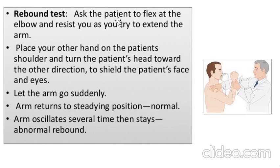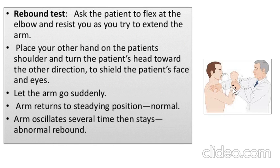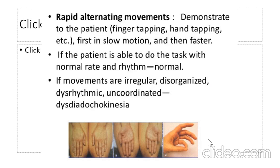For the rebound phenomenon, ask the subject to flex at the elbow and resist as you try to extend it. Place your other hand on the patient's shoulder and turn the patient's head to the other direction to shield the face and eyes. Then suddenly release the arm. Normally the arm returns to the same level, but in cerebellar disease the arm oscillates in various directions — this is called abnormal rebound.